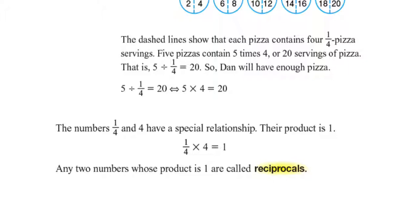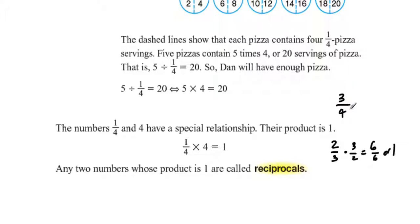Good examples of reciprocals: take two-thirds — what do you multiply two-thirds by to get one? That would be three over two, because that gives six over six, which is one. Another example: the reciprocal of three-fourths is four over three, because their product is one. And the reciprocal of five is one-fifth, because five times one-fifth equals one. When you talk about reciprocals, their product will always be equal to one.